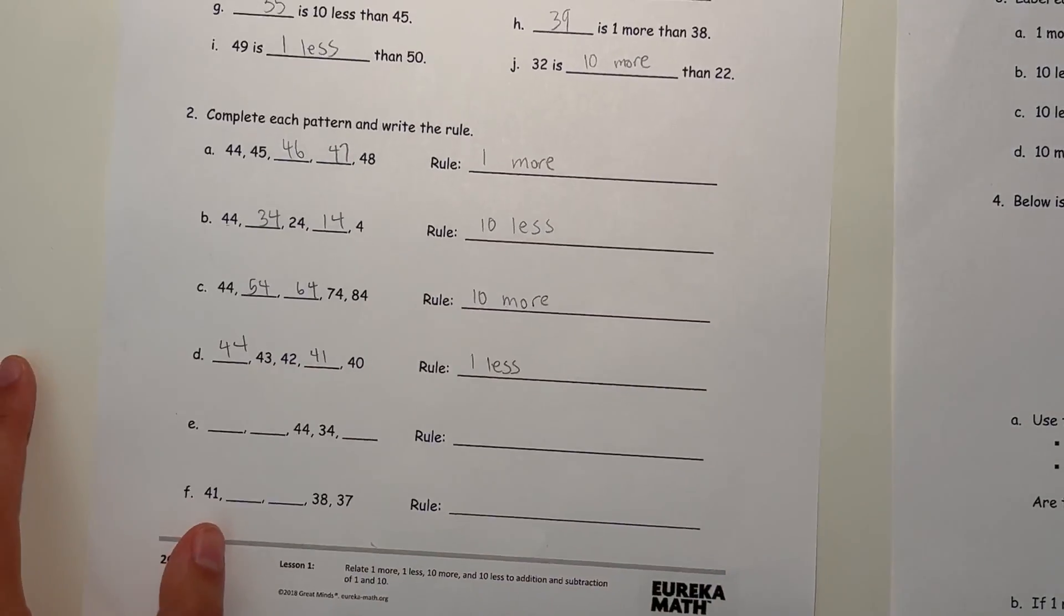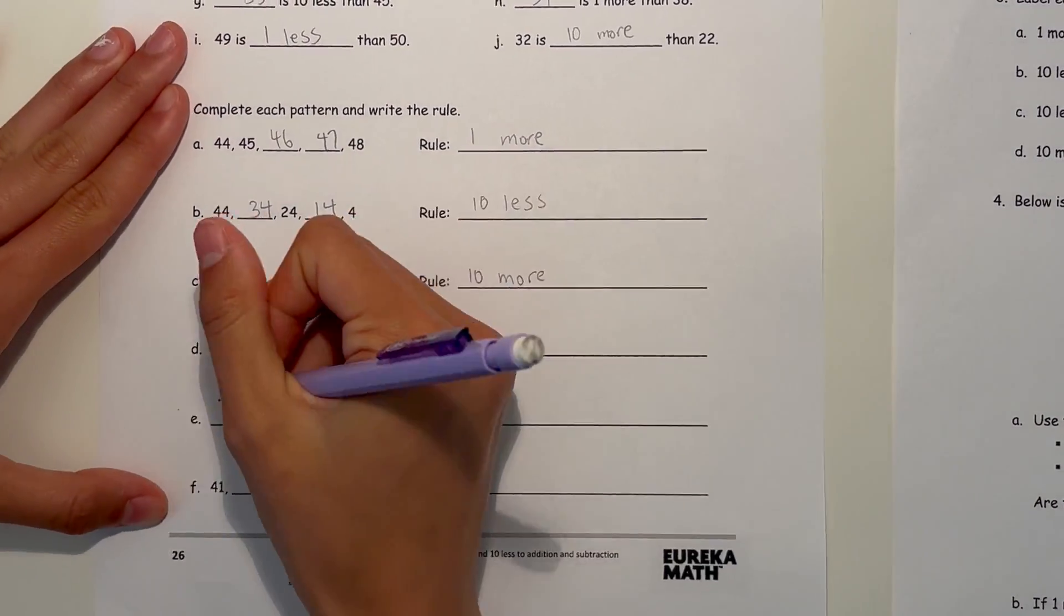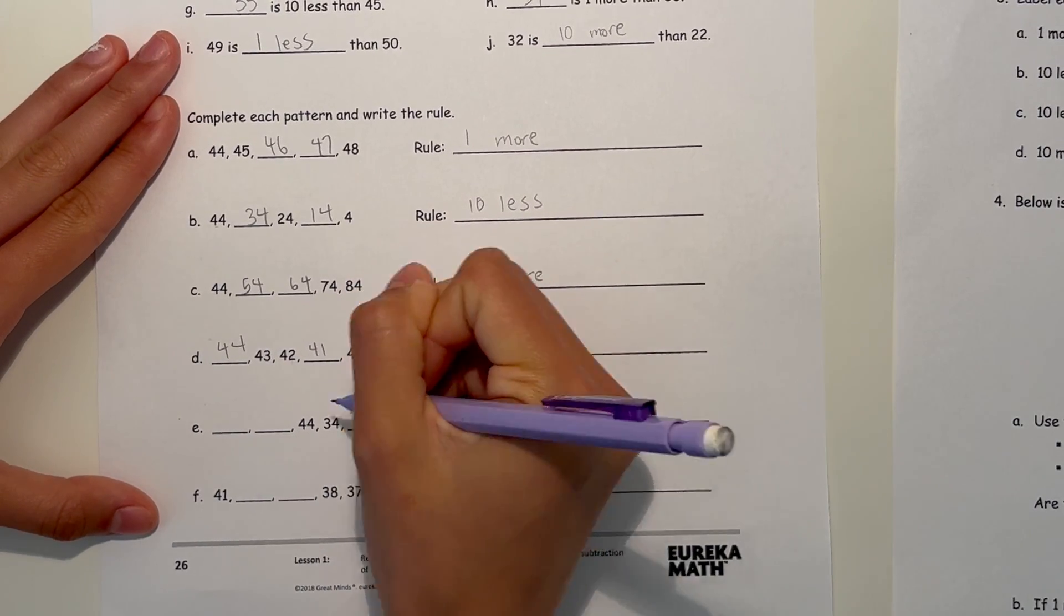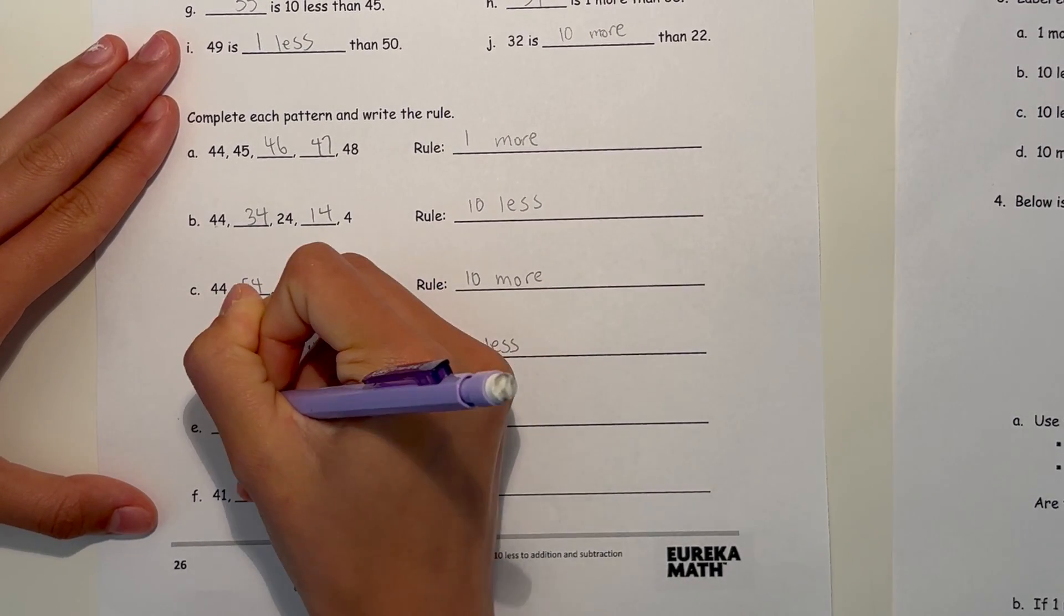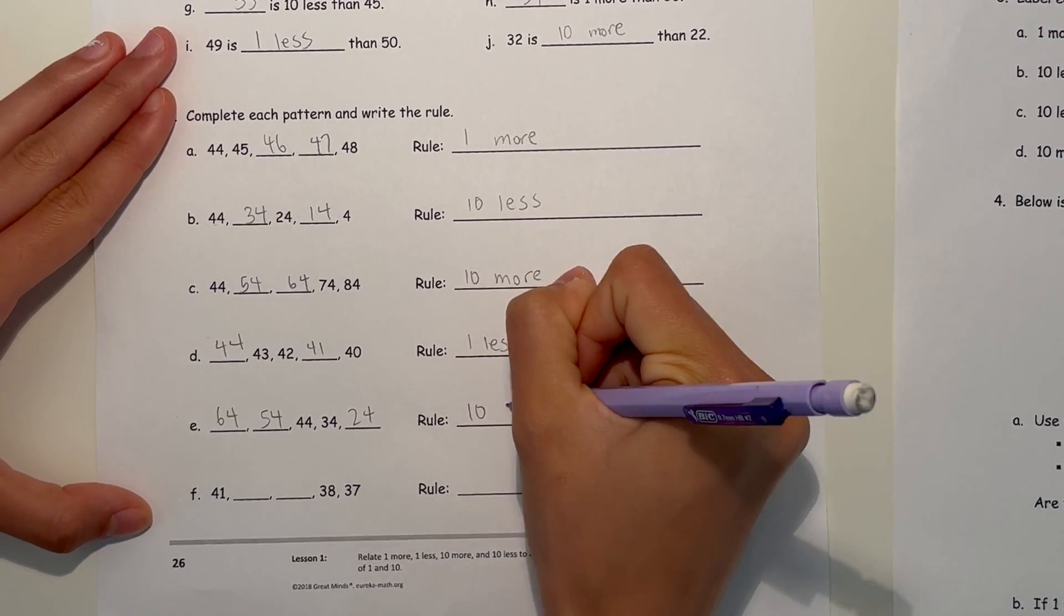And now E. So we do know it went from 44 to 34, which means it's going 10 less. So this is 24, which means this is 54, and this is 64. So the rule is 10 less.